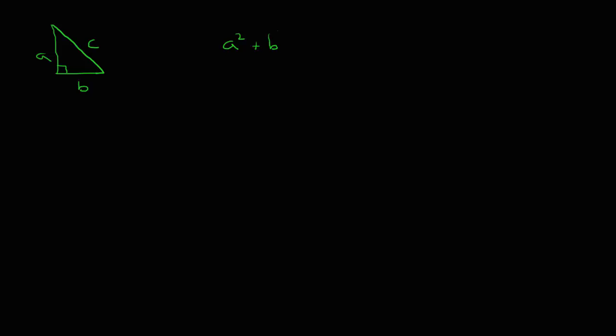We're going to take a look at the Pythagorean Theorem. What the Pythagorean Theorem says is that if I have a right triangle with legs A and B and hypotenuse C, we can find the relationship: A squared plus B squared will always equal C squared.